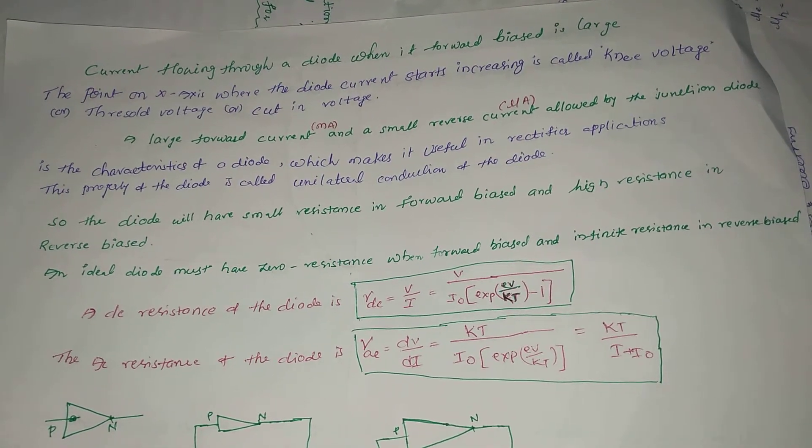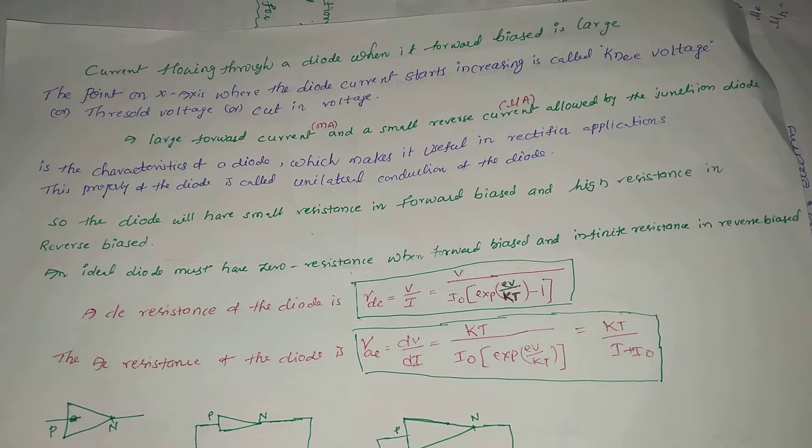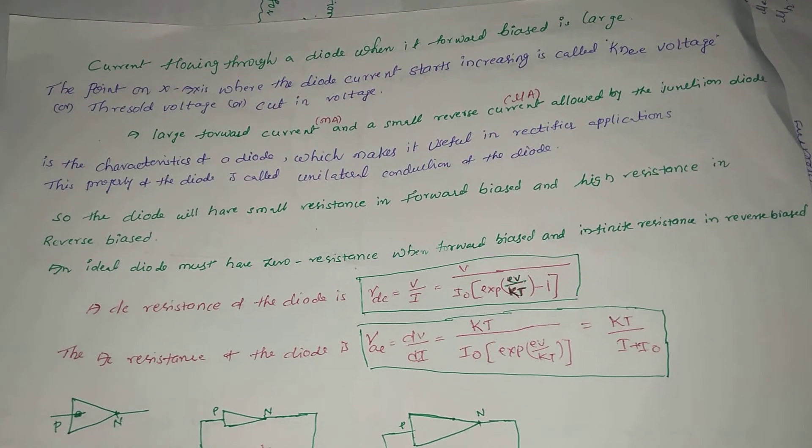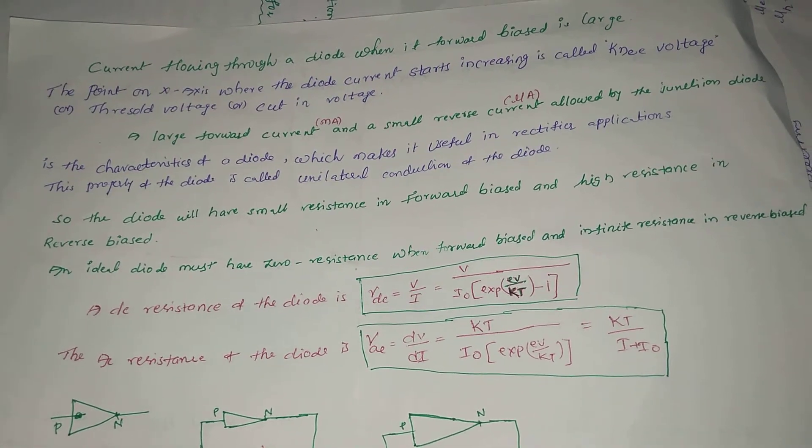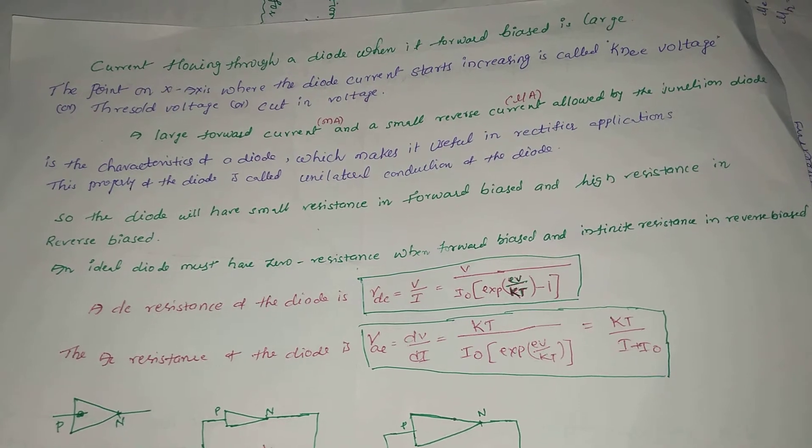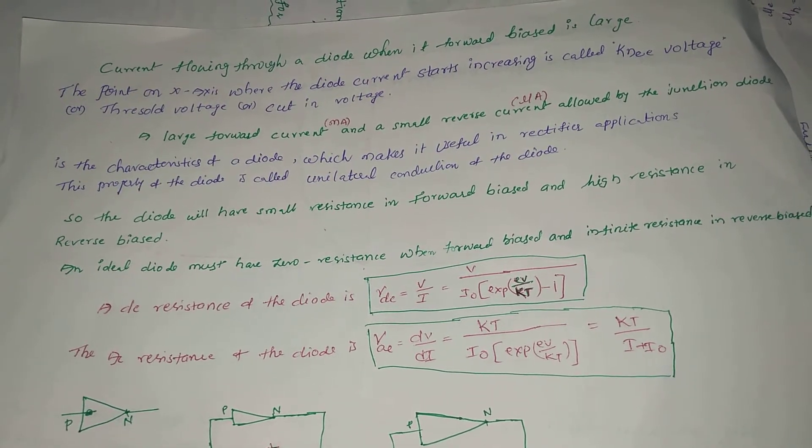This property of the diode is called unilateral conduction. So, the diode will have small resistance in forward bias and high resistance in reverse bias.